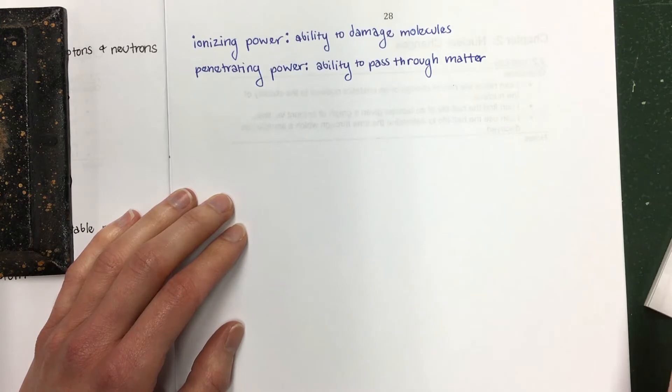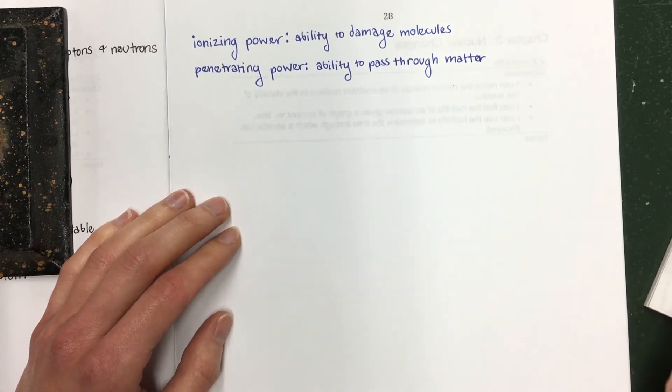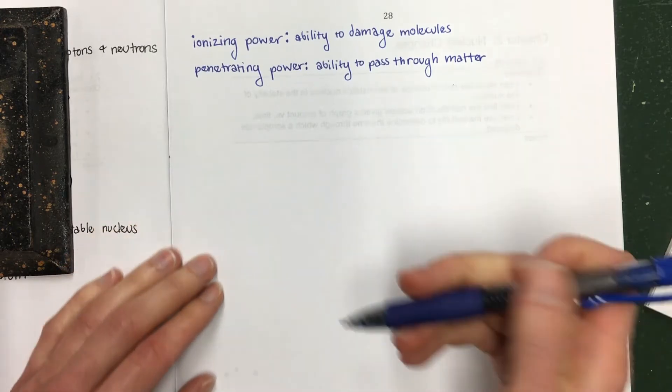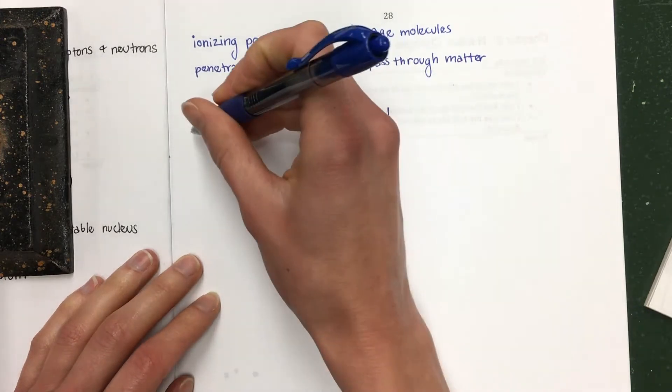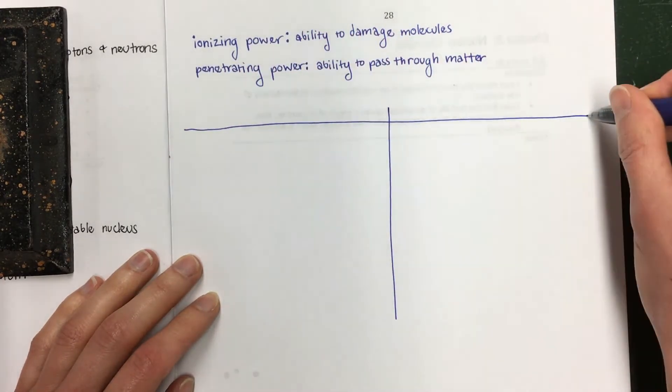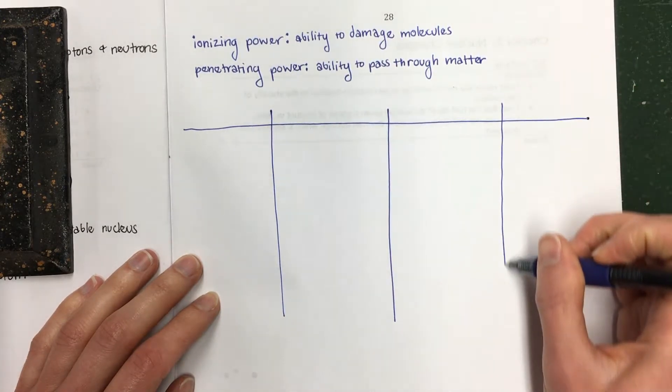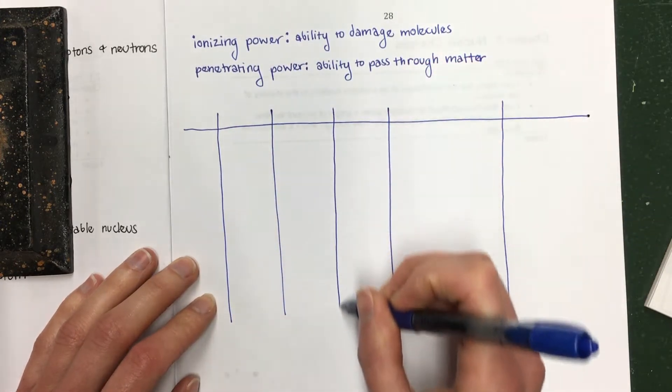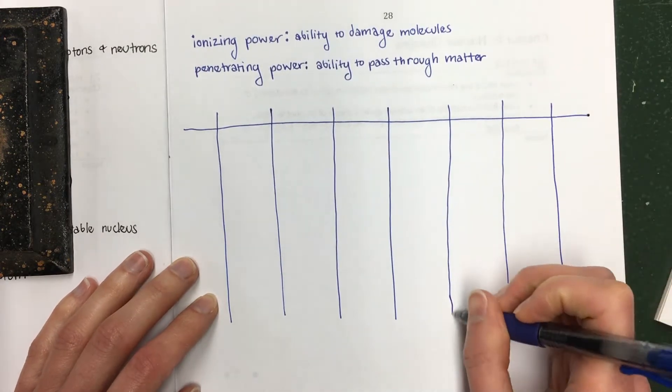Now we're going to make a big chart and we're going to fill in some information about different types of radioactivity. This chart is going to need to have eight columns. So I'm going to split my page in half, and then I'm going to split each of those in half. So I've got four, and then we'll split each of those in half. So I've got 1, 2, 3, 4, 5, 6, 7, 8.